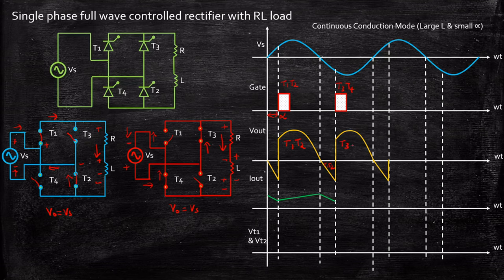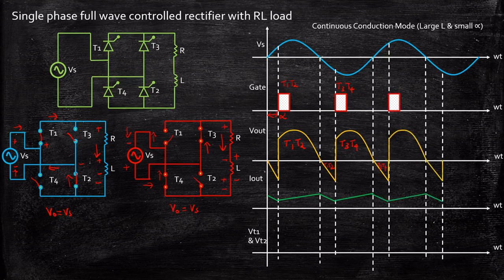T3 and T4 are turned on. When the supply voltage goes in the opposite direction for T3 and T4, they will still continue to conduct because of the stored energy in the inductor — the same as was the case for T1 and T2. The same cycle repeats for the current waveforms, continuing to conduct because of T1 and T2 alternately.